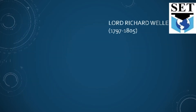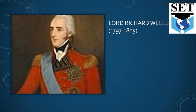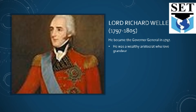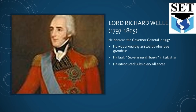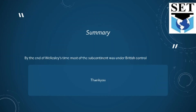After Lord Cornwallis, there is Lord Richard Wellesley, who became Governor General from 1797 to 1805. He was a wealthy aristocrat who loved grandeur. Wellesley built Government House in Calcutta, which was at that time the subcontinent's finest building. He introduced subsidiary alliances and built Fort William College at Calcutta. By the end of Wellesley's time, most of the subcontinent was under British control.